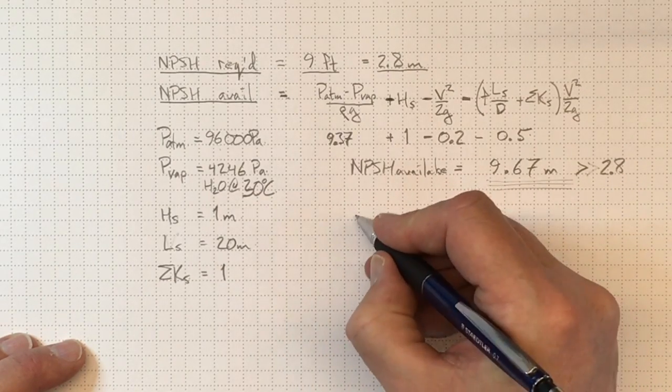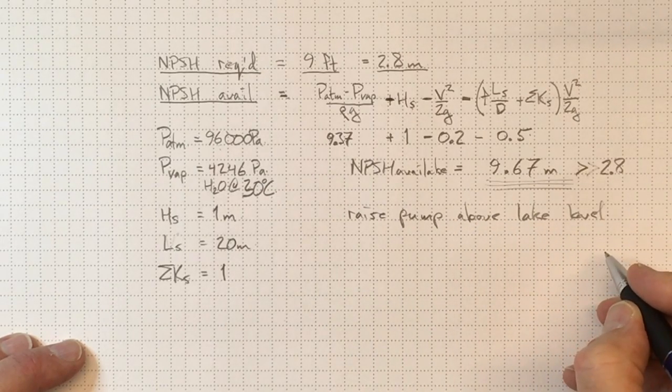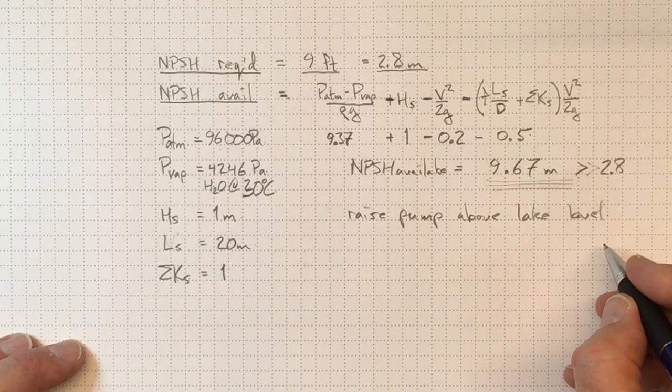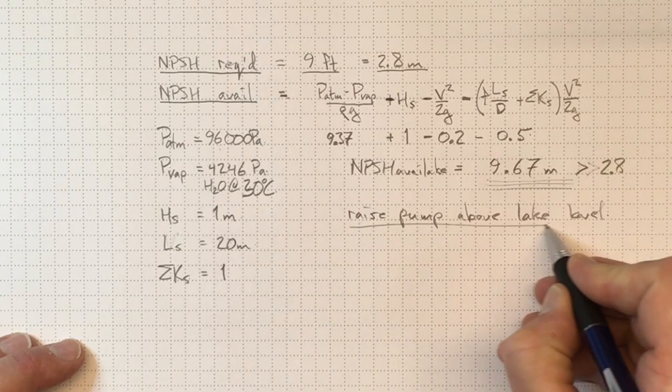So we could afford to move the pump up a little bit. For instance, we could raise our pump above the water level. That has all sorts of practical advantages. We don't have to dig a basement that goes below the level of the lake that is inevitably going to flood with water.